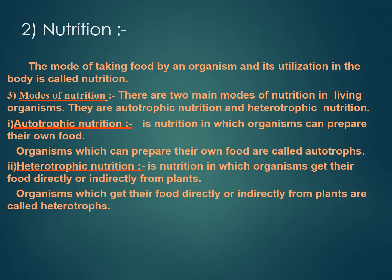Now let us start the next topic of this chapter, which is nutrition. Nutrition means intake of food. Nutrition is a process by which an organism obtains its food and utilizes it in the body. Plants are able to make their own food whereas animals cannot. So depending upon the mode of obtaining food, all organisms can be placed into two groups: autotrophic nutrition and heterotrophic nutrition.